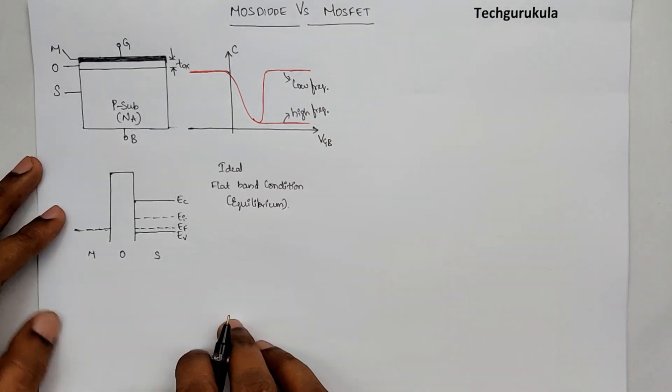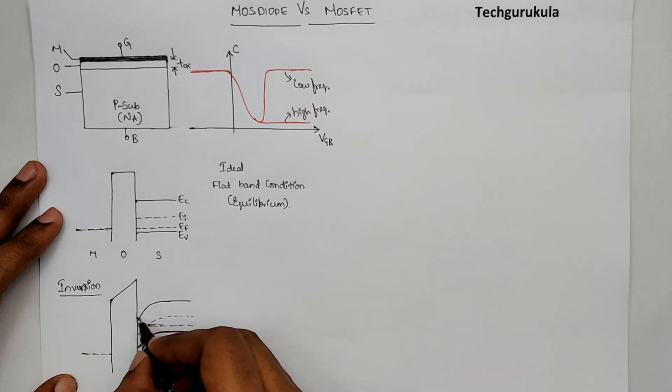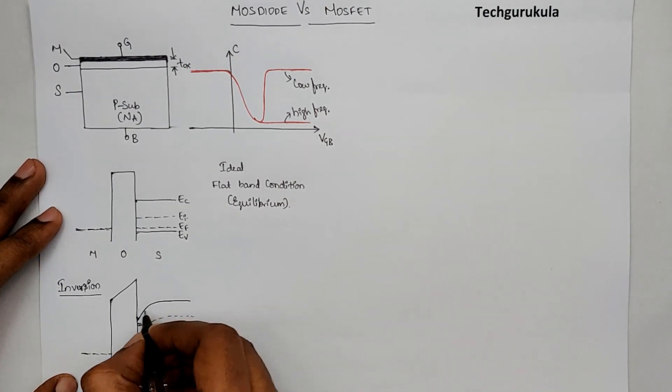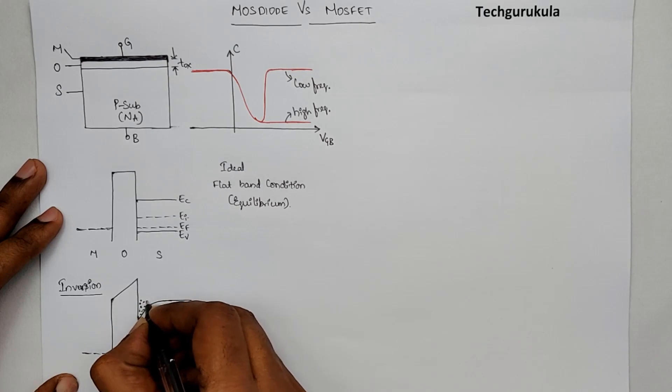In inversion, the energy band diagram was like this, where the energy bands were bent in this fashion, where we had the electric field in this direction, and we had lots of electrons present near the silicon dioxide-silicon interface. We call this the inversion condition.